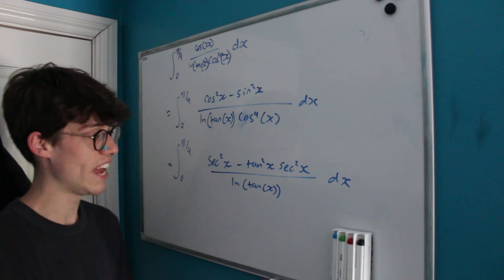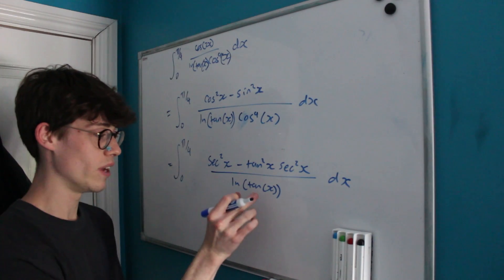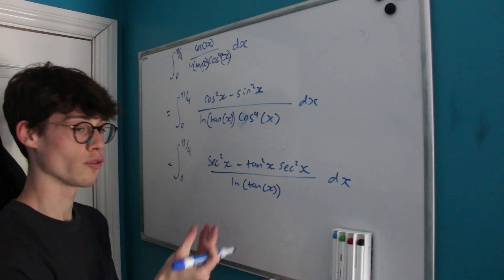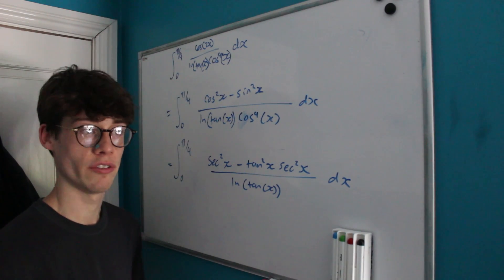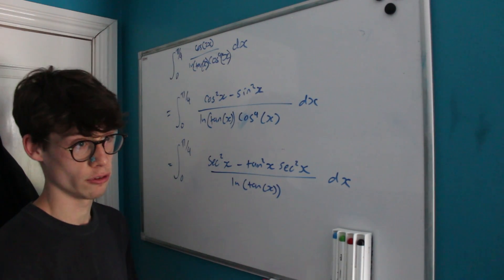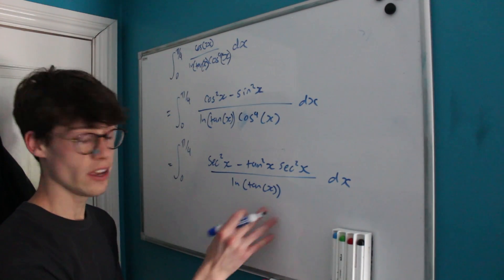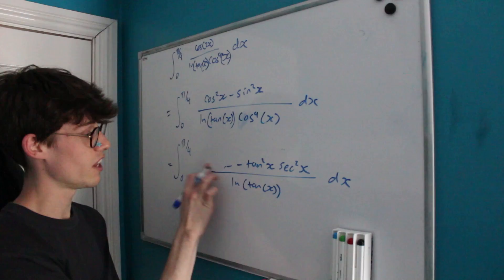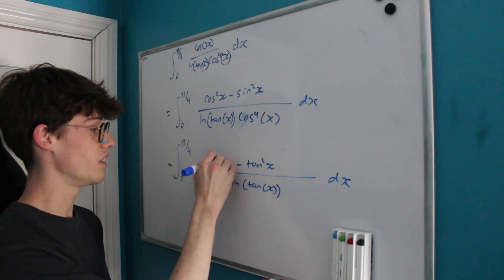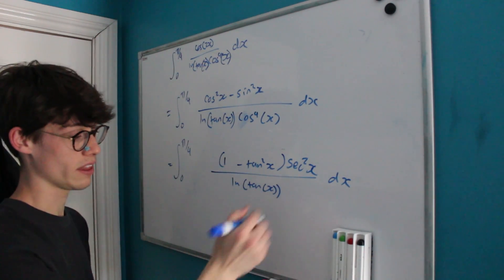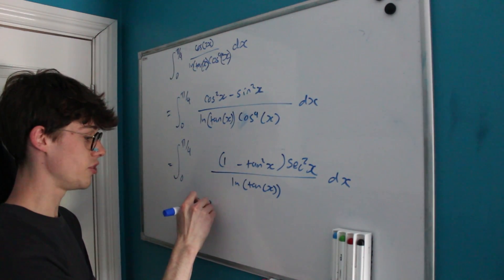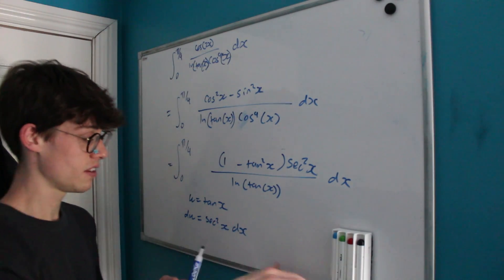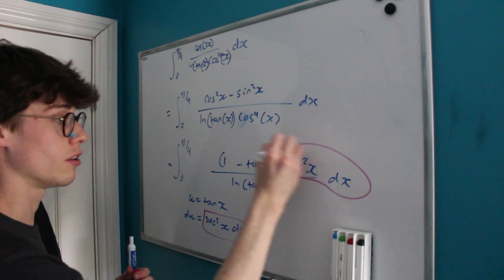As soon as you see sec²x in an integral involving tan — especially when tan is inside a natural log — we know we need to make a u-substitution. From the beginning of looking at this integral we should have sensed a tan substitution coming. The derivative of tan(x) is sec²x, and we have a factor of sec²x dx in our rewritten integral. Factoring out sec²x, the substitution u = tan(x) gives du = sec²x dx, which we have right here.